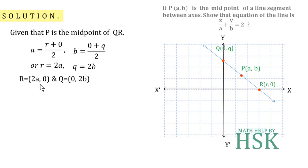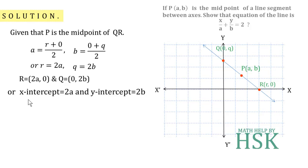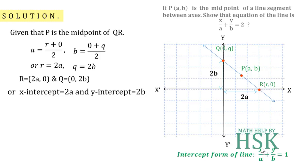The coordinates of R can be written as (2a, 0) and Q as (0, 2b). This means the x-intercept of the line is 2a and the y-intercept is 2b. The intercept form of the line is known to us as x/a + y/b = 1, so applying the intercept form with x-intercept 2a and y-intercept 2b.